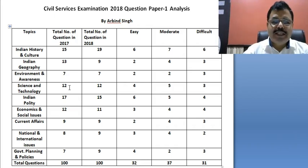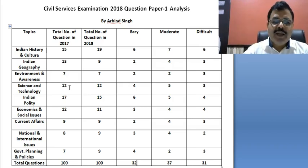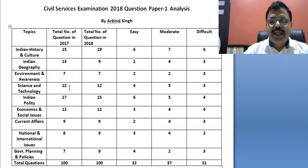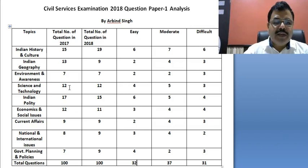In Indian Polity, compared to last year, they asked two fewer questions — instead of 17, they asked 15 questions: six easy, five moderate, and four difficult. In Economics and Social Issues, they asked 11 questions compared to 12 last year — three easy, four moderate, and four difficult.